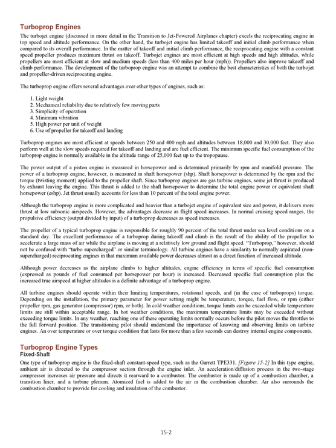Turboprop engines. The turbojet engine excels the reciprocating engine in top speed and altitude performance. On the other hand, the turbojet engine has limited takeoff and initial climb performance compared to its overall performance. In the matter of takeoff and initial climb performance, the reciprocating engine with a constant speed propeller produces maximum thrust on takeoff. Turbojet engines are most efficient at high speeds and high altitudes, while propellers are most efficient at slow and medium speeds — less than 400 mph. Propellers also improve takeoff and climb performance. The development of the turboprop engine was an attempt to combine the best characteristics of both the turbojet and propeller-driven reciprocating engine.